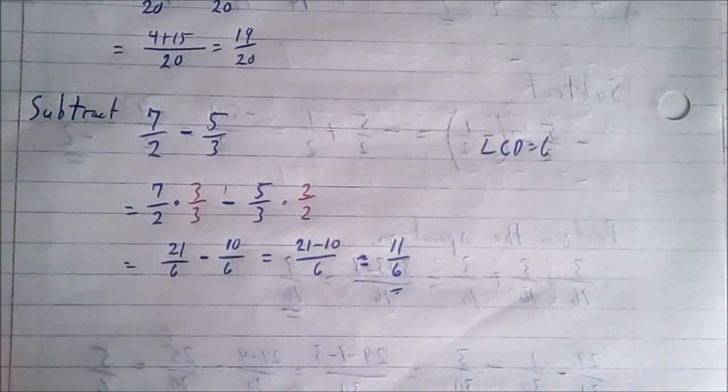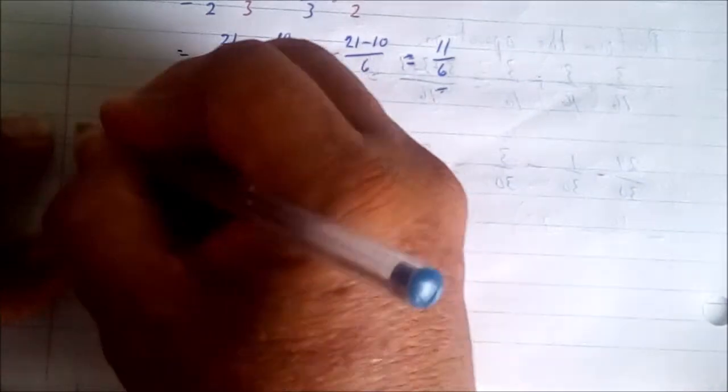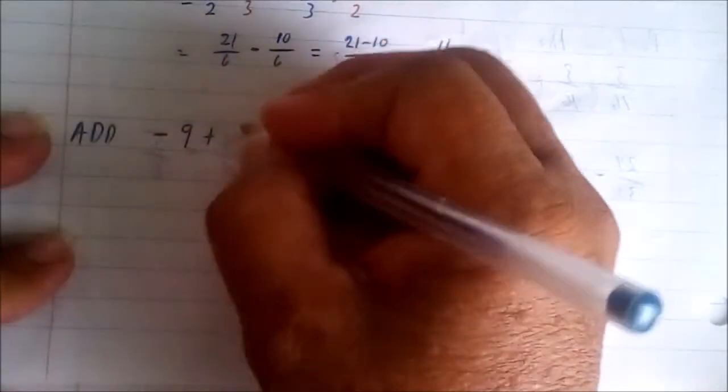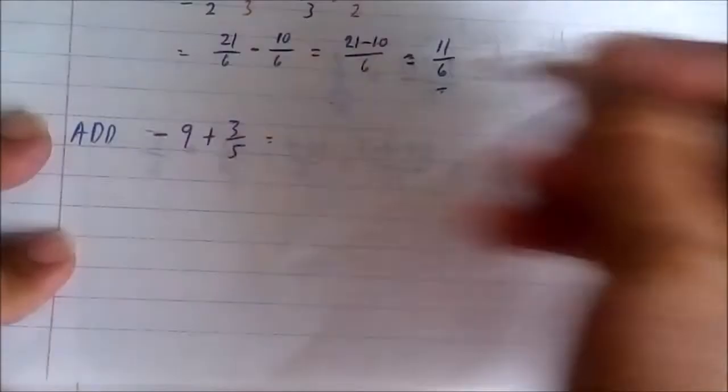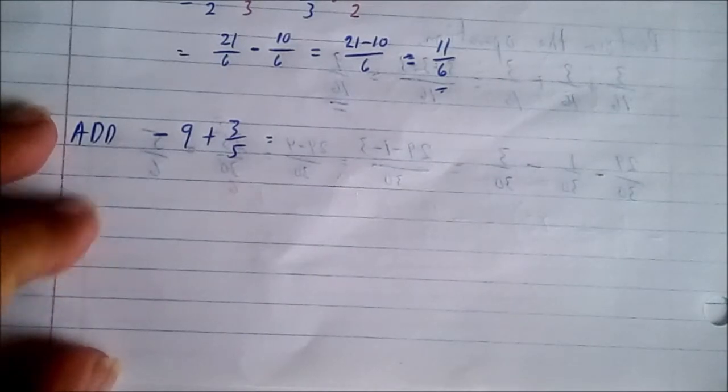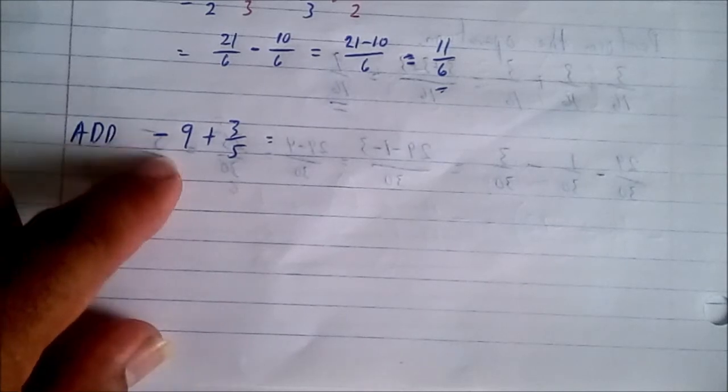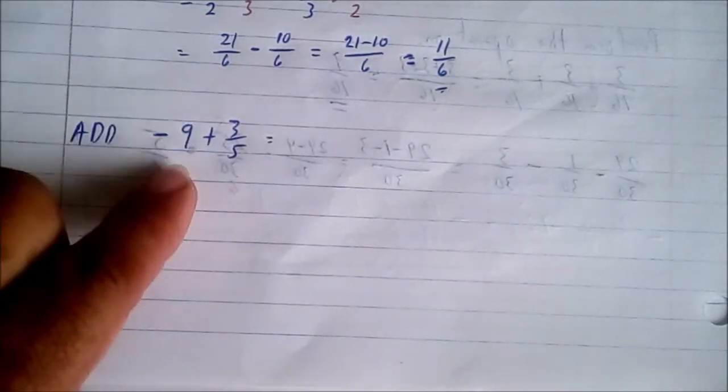And that's your solution for it. Nothing complicated there, just follow the procedures and you should have no problem whatsoever. Let's go with some other examples. Consider example: Add negative 9 plus three fifth. So what do I do here? Well if you notice I have negative 9, and what I need to do is convert negative 9 to a fraction.